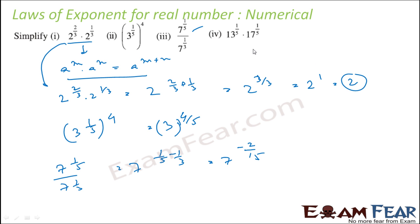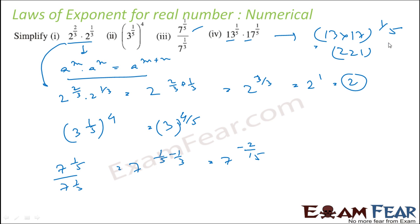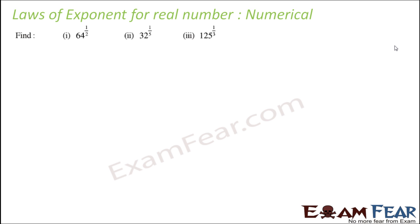Next: 13 to the power 1 by 5 times 17 to the power 1 by 5. Since the exponent 1 by 5 is common, this can be written as 13 times 17, to the power 1 by 5, which equals 221 to the power 1 by 5. Then: 64 to the power 1 by 2 is simply the square root of 64, which equals 8, since 8 times 8 is 64.